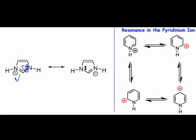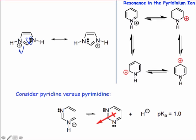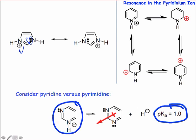This same idea helps explain why pyrimidine, pyridine with an extra N2 nitrogen, is even less basic than pyridine. Try drawing resonance structures of the conjugate acid of pyrimidine, pyrimidinium ion, to help explain this.